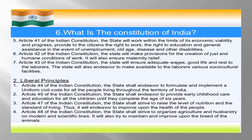Article 43 of the Indian Constitution: The state will ensure adequate wage, good life and rest to the labour. The state will also endeavor to make available various social and cultural facilities to the labourers — हर person को बराबर wage मिलना चाहिए, wage workers जो construction sites पर काम करते हैं उनकी अच्छी condition होनी चाहिए, उनको rest का time मिलना चाहिए, food provide किया जाना चाहिए। एक अच्छा helpful environment होना चाहिए ताकि वो अच्छी condition में work कर सकें और उनकी health खराब नहीं हो।